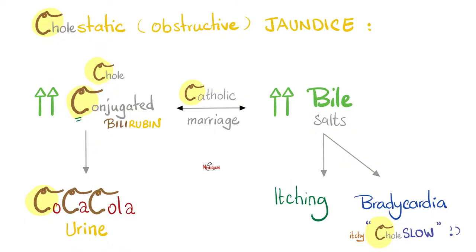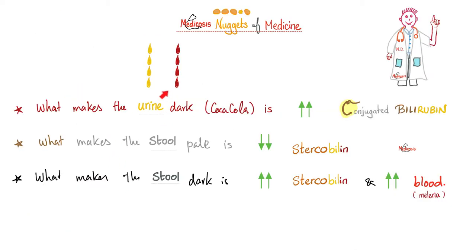What makes the color of the urine Coca-Cola-like? It's the conjugated bilirubin, not the unconjugated. Remember, the unconjugated is not water-soluble — it cannot show up in the urine because it will not be filtered by the kidneys. So what makes the urine dark? Conjugated bilirubin.